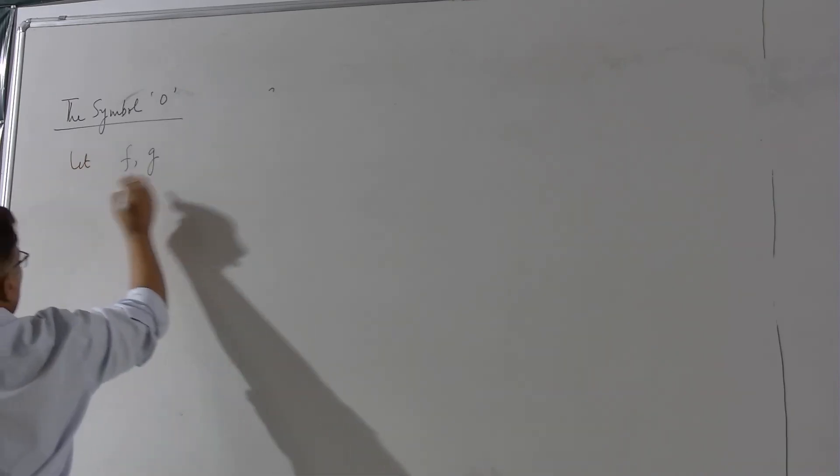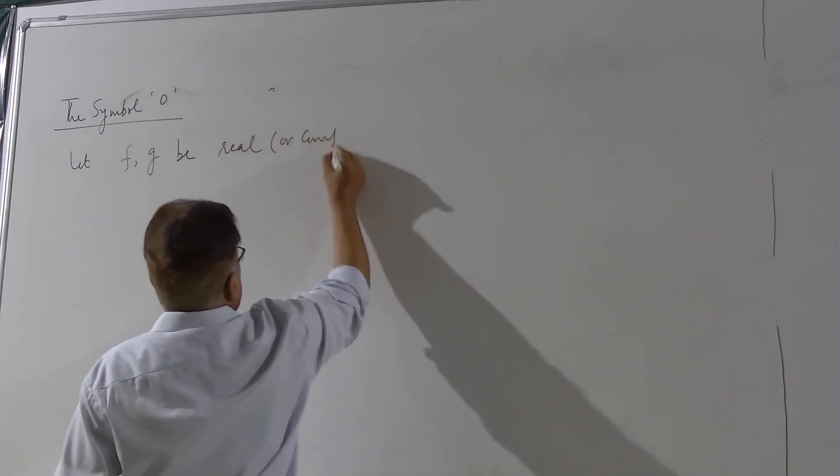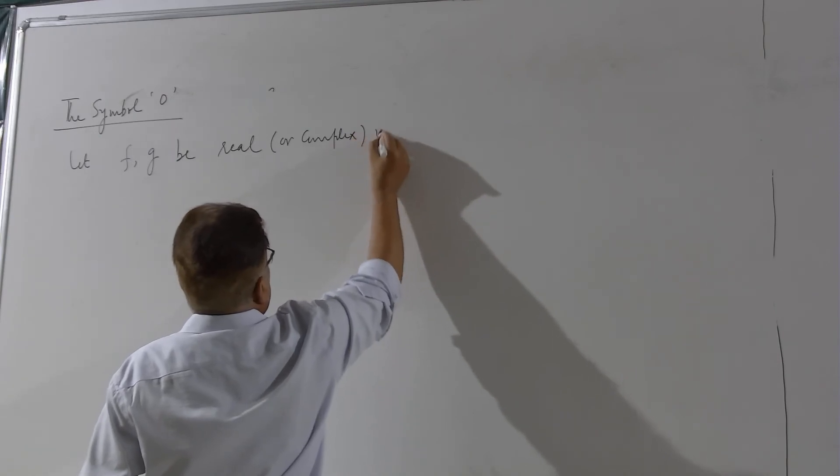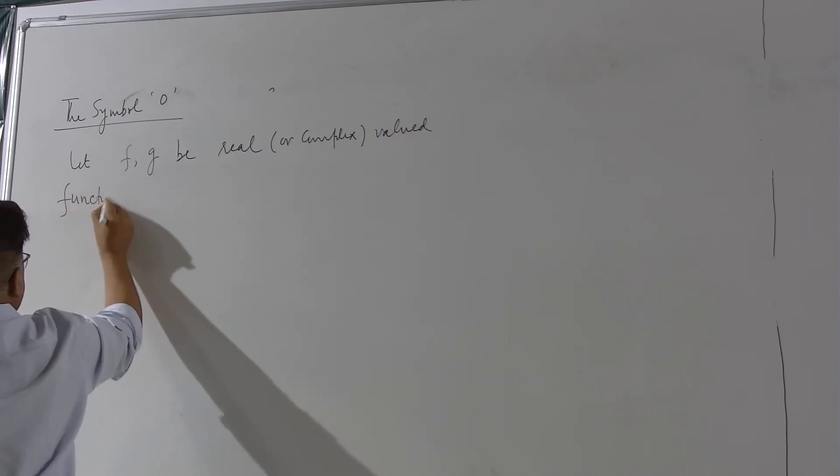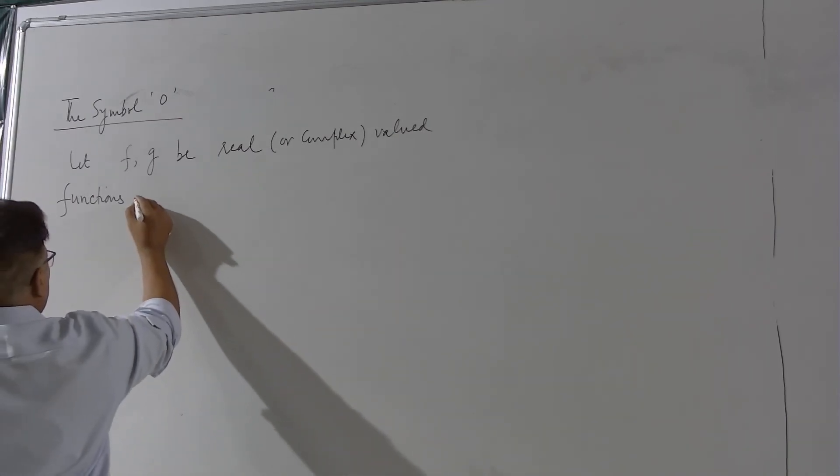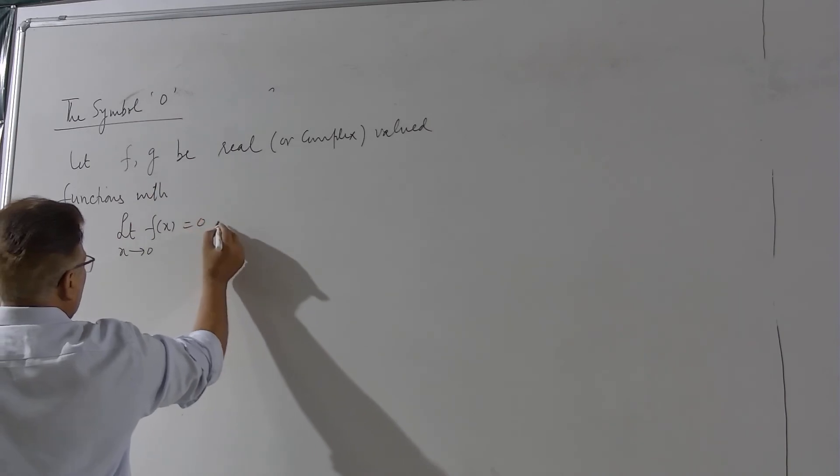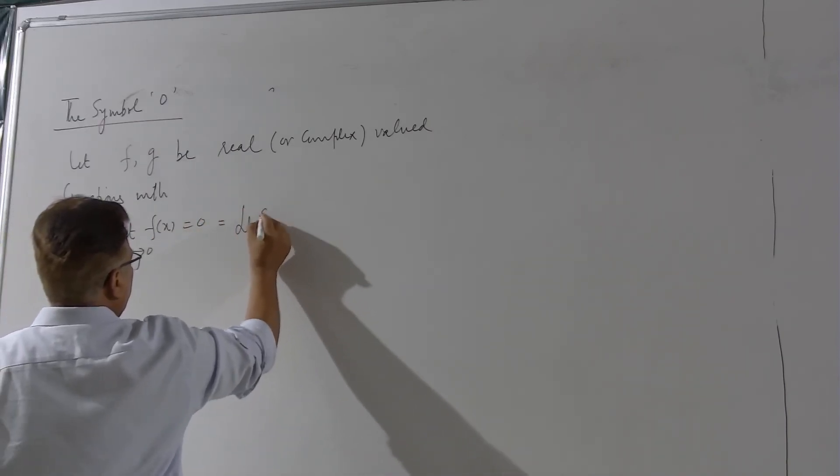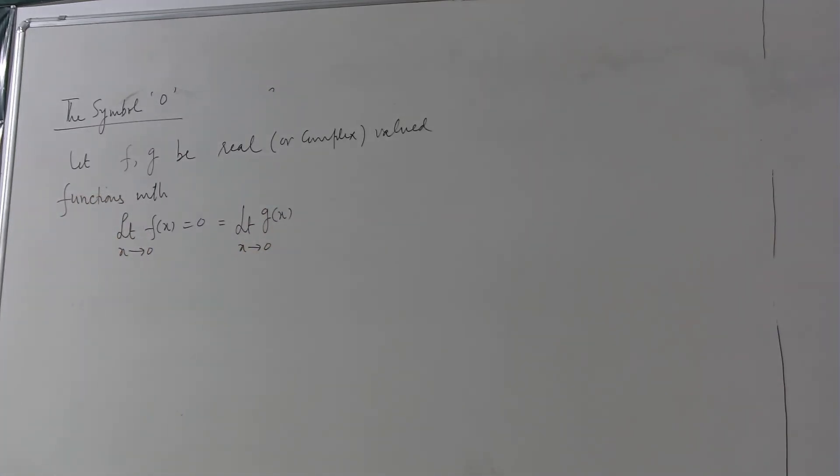Let f and g be real or complex valued functions with limit of f(x) when x goes to 0 is 0, and also limit of g is also 0 when x goes to 0. These are the two functions whose limit is 0 when x approaches to 0.